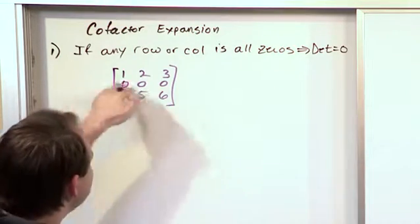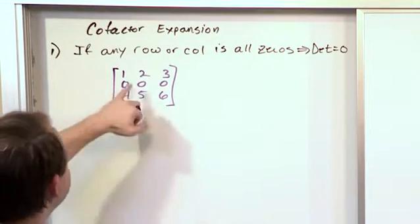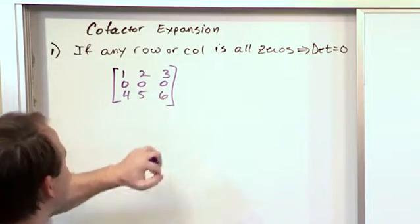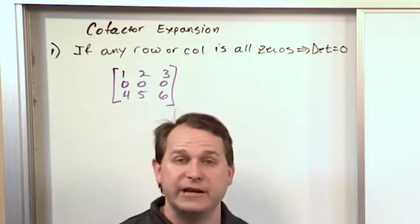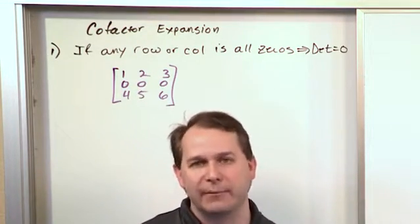So if we expand about the middle row, what we'll have is this zero times the cofactor at this location, plus this times the cofactor at that location, plus this times the cofactor of that location. That is the definition of cofactor expansion to find the determinant.